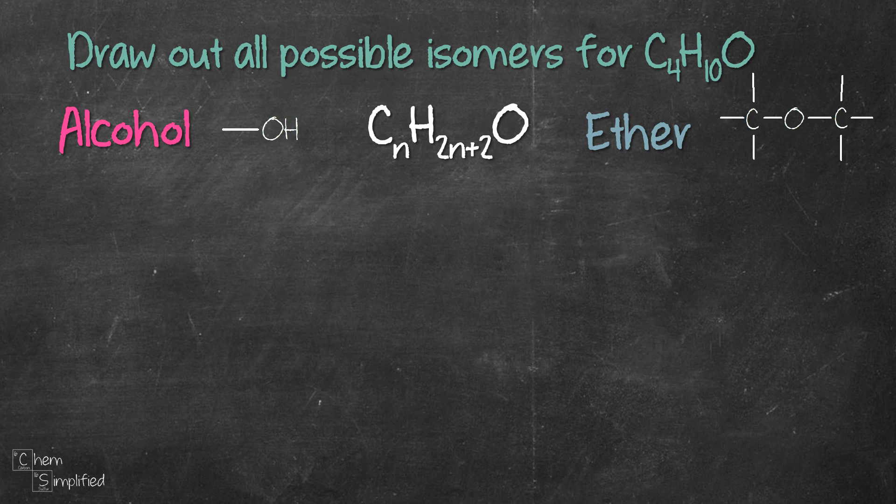Let's start by drawing a 4-carbon chain, meaning 4 carbons connected straight in a row, and we place the OH on the first carbon. That will give us our first structure.